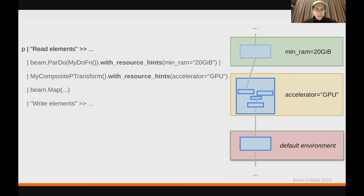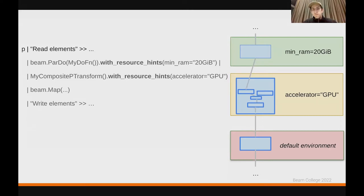Now we're going to add some resource hints to this pipeline. Using a Python example, the way we can add resource hints is we look at the transforms and say we want to instantiate these transforms with an additional modification where we set some resource hints — meaning that, for example, the first ParDo needs to be executed in an environment that has at least 20 gigabytes of RAM, or the second transform needs an environment that has an accelerator.